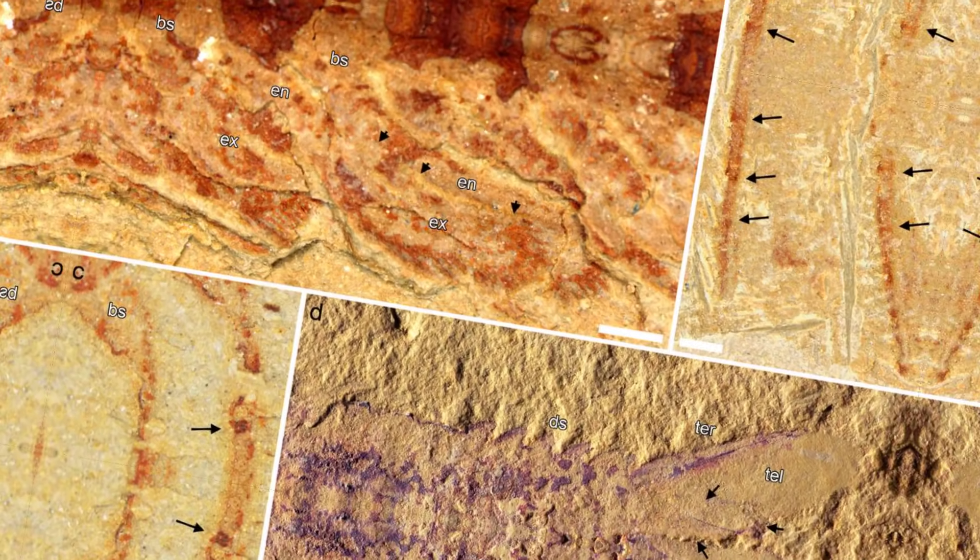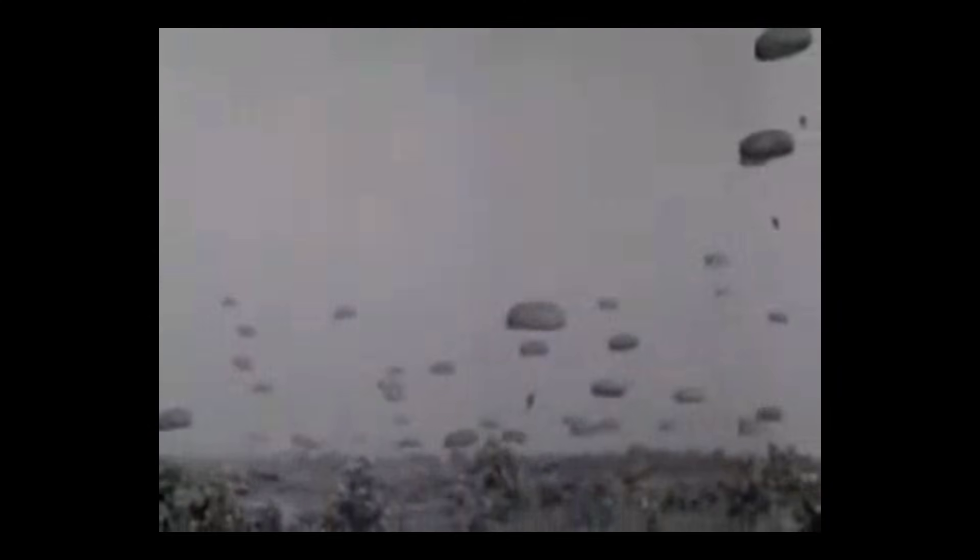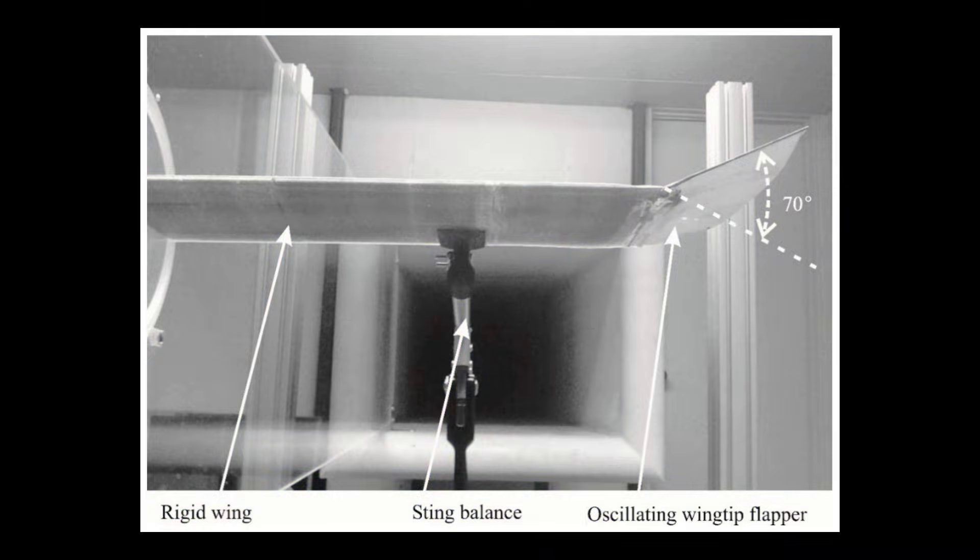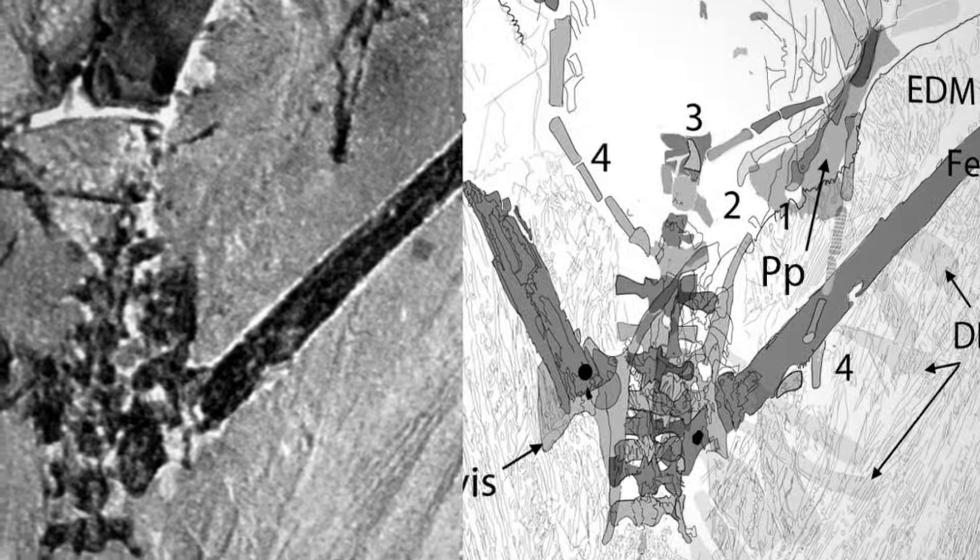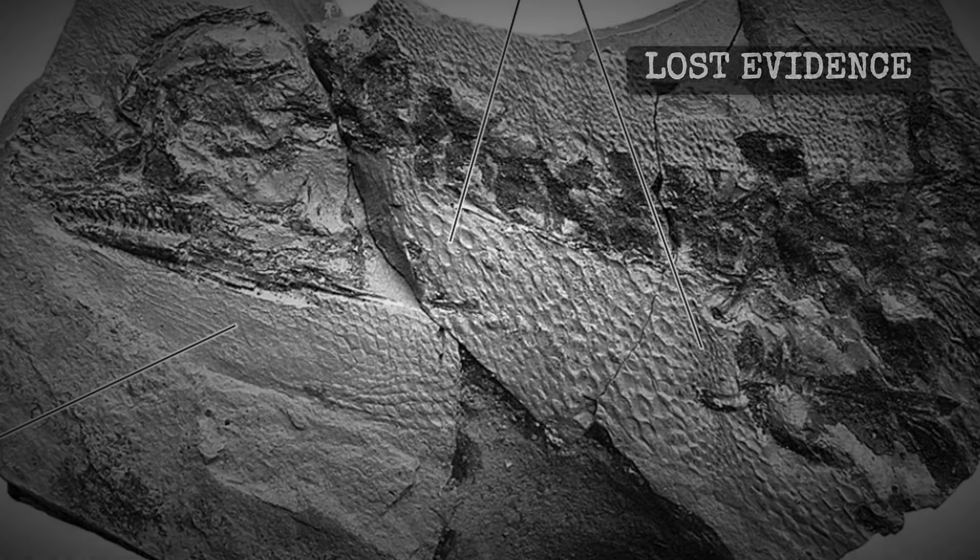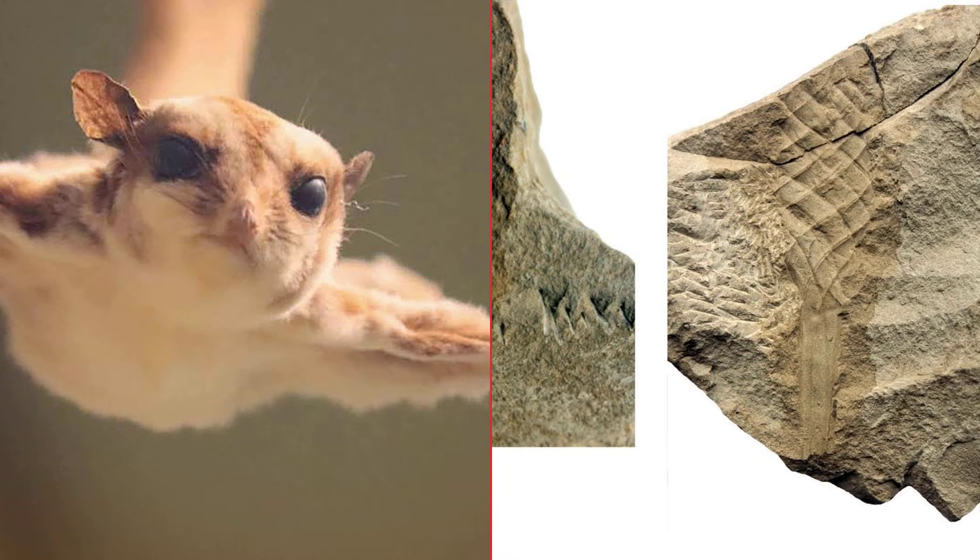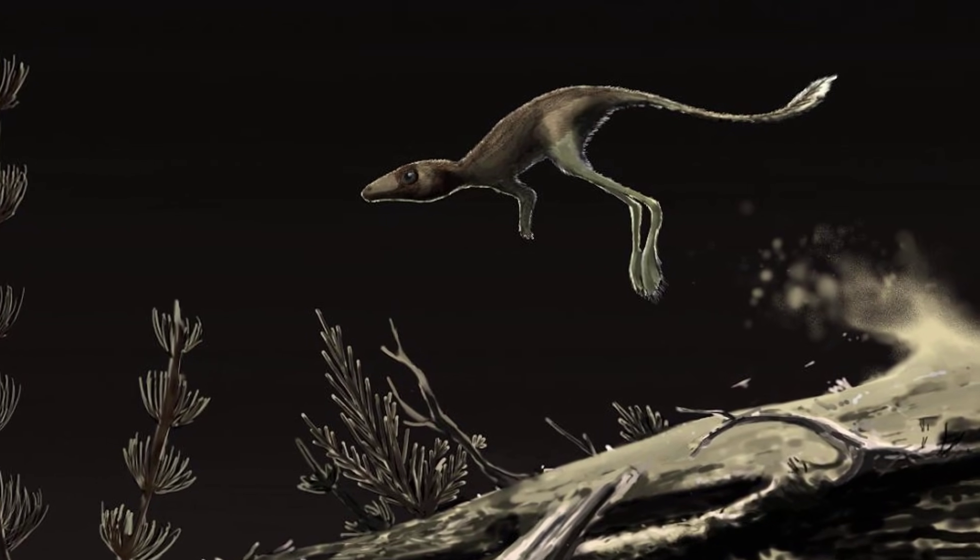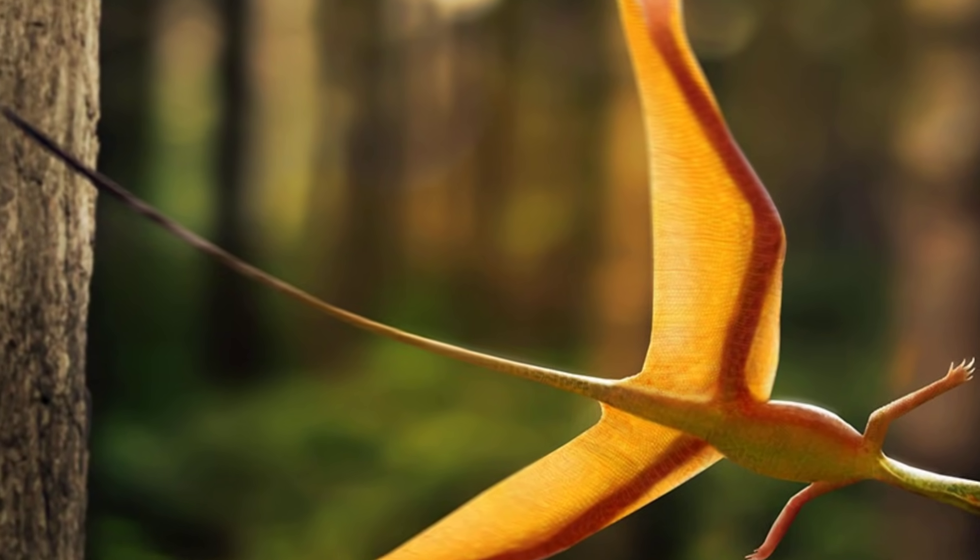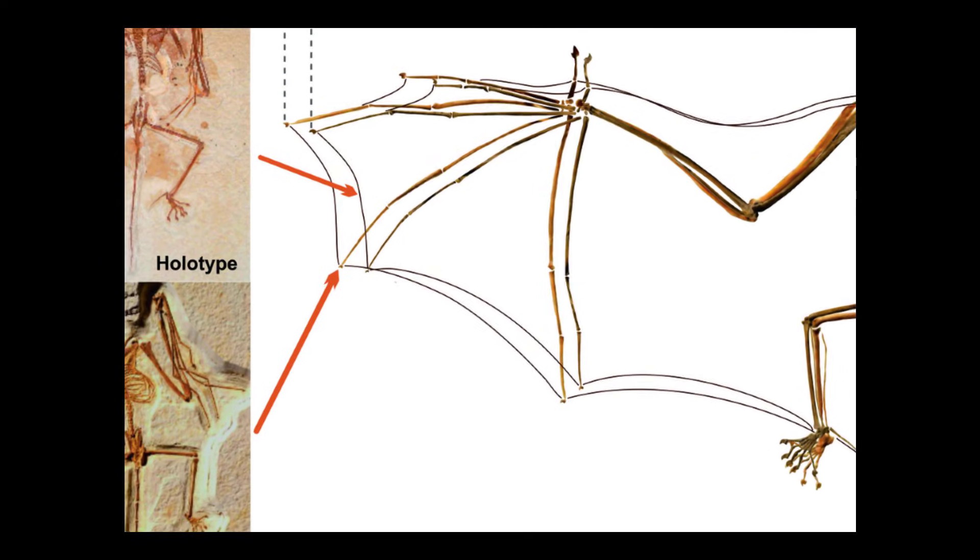Under magnification, the fossil preserves striations in the membrane, fiber bundles radiating outward from the legs. These are not random. They are structural reinforcements, like the ribs in a bat wing or the struts in a parachute. The fibers prevented flutter. When the membrane was deployed, these fibers kept it taut and aerodynamically stable. The membrane also shows creases. Even when the legs were extended, the membrane did not fully flatten. It retained folds exactly like modern flying squirrels. This suggests Sharovipteryx could not fully retract its wings. The membrane was always partially deployed, which means walking on land was awkward, climbing was difficult, running was nearly impossible. Evolution gave this animal wings, and in doing so, made it helpless on the ground.